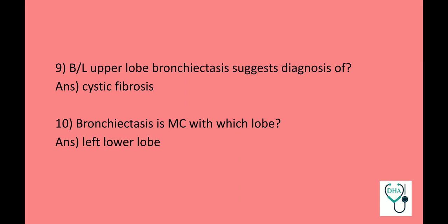Bilateral upper lobe bronchiectasis suggests a diagnosis of cystic fibrosis. Bronchiectasis is most common in which lobe? Left lower lobe.